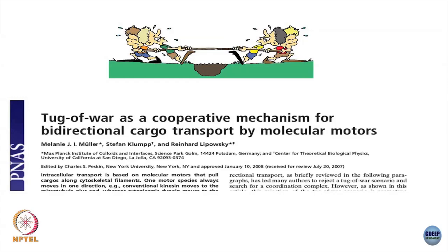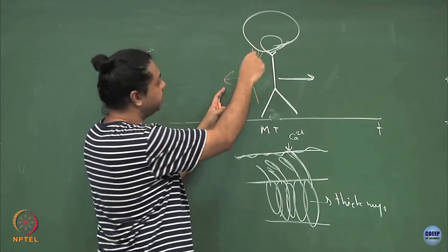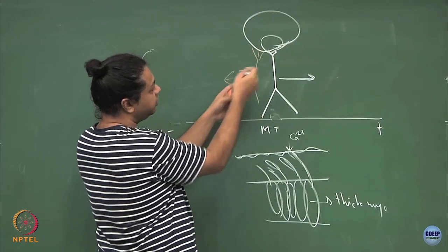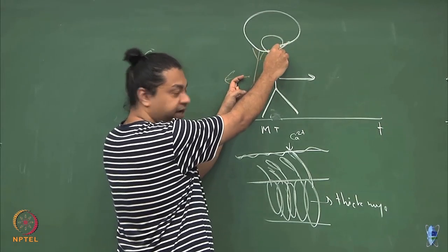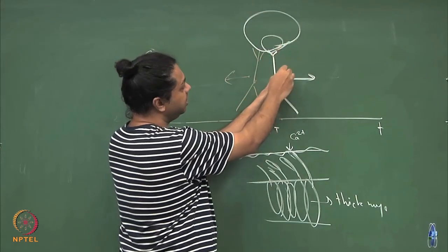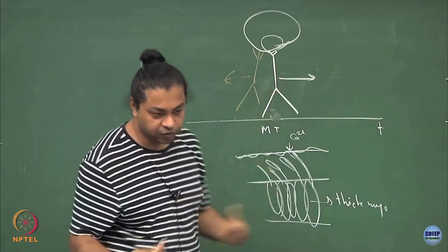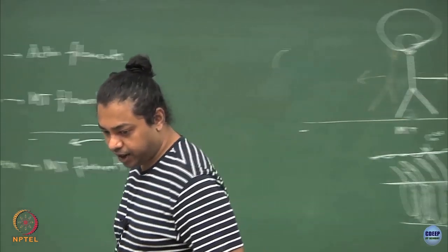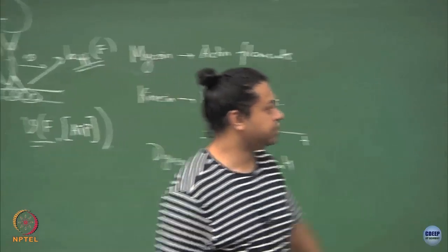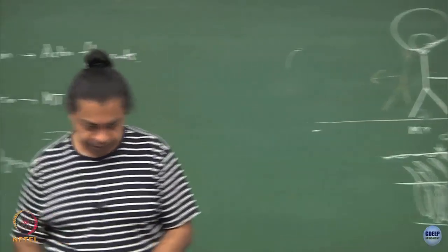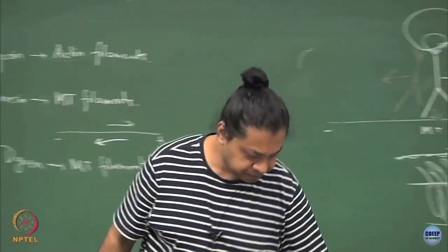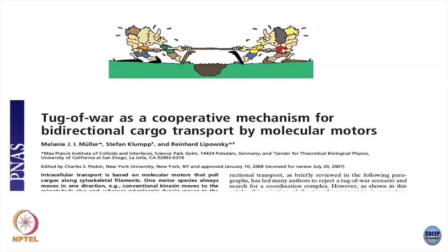Kinesin motors exert force in one direction; dynein motors exert force in the other direction, and the cargo will move in the resultant direction given by the balance of forces. The dyneins want to move one way so they exert a force on the kinesins. Similarly, the kinesins want to move the other way so they exert a force on the dyneins. The forces generated are internal and each motor feels the force generated by the opposite type.